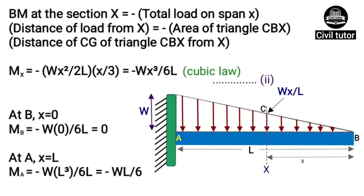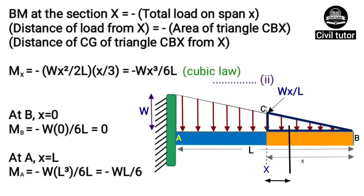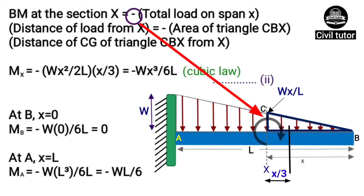The bending moment at section x equals minus the total load on span x multiplied by the distance of that load from x. The total load on span x equals the area of triangle CBx, and the distance of the load from x is the distance of the center of gravity of triangle CBx from section x, which is x/3. The negative sign indicates a clockwise moment.